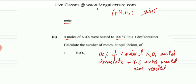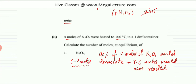The amount of N2O4 remaining: out of 4 moles, 90% are gone, so you are left with 0.4 moles. That is the answer — 0.4 moles of N2O4 remain at equilibrium.